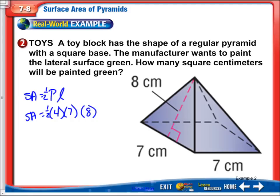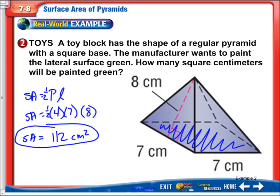So again, you're doing a half of something. So take half of one of your even numbers. So half of 4 is 2. Okay, and then we have 7 times 8 is 56. And 2 times 56 would be 112. So we have 112 centimeters squared would be our total lateral surface area. Again, we're not including the area of the base because it didn't want that. It just wants to paint the lateral surface green.